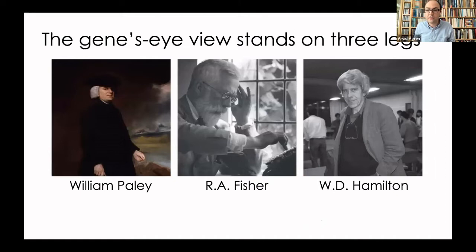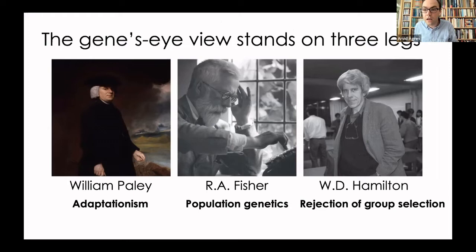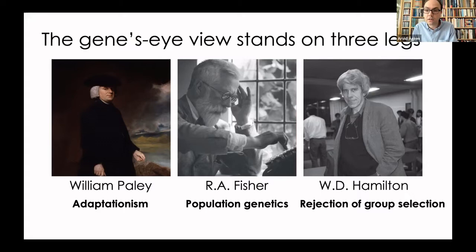I'll highlight the historical context from which the gene's eye view emerges and some of the key people involved, and see where this way of thinking has been especially helpful. I lay out the argument that you can summarize the intellectual core of the gene's eye view by highlighting three people: William Paley, Ronald Fisher, and Bill Hamilton. Between them they represent three strands that the gene's eye view synthesizes: a commitment to adaptationism, a Fisherian version of population genetics, and a rejection of naive forms of group selection.